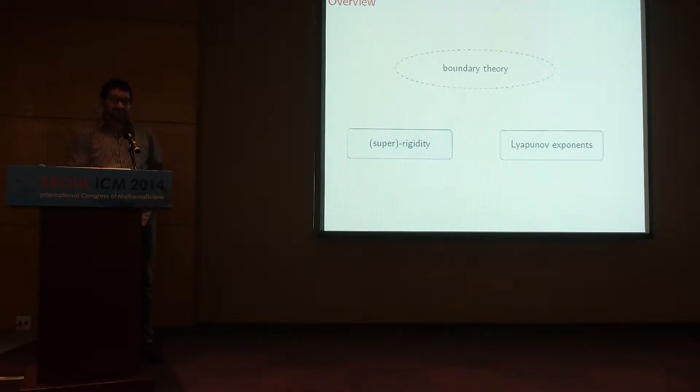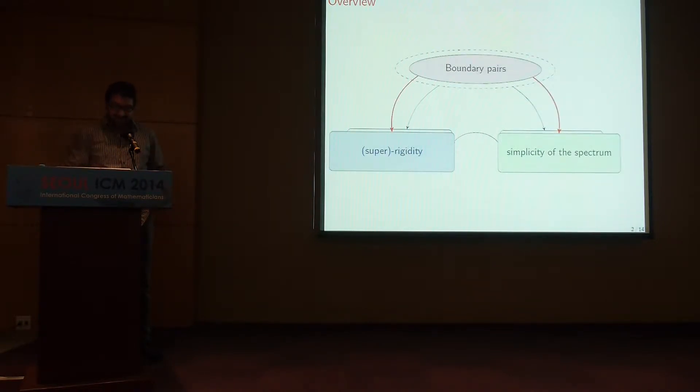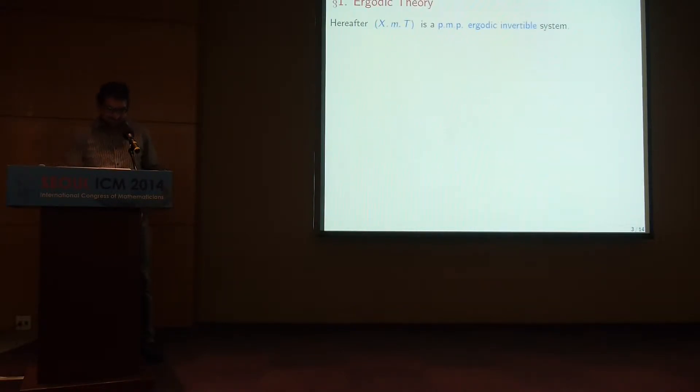In trying to understand superrigidity phenomena with Uri Badr, we were eventually led to some variant on the definition of the boundaries that we found very useful. The three topics are, of course, related and were related before. For example, in his original proof, Margulis used Lyapunov exponents, non-vanishing of Lyapunov exponents for a certain cocycle in the proof of superrigidity theorem. But what I will try to describe, or at least indicate some connections, is some definition of boundaries that helps us to prove some more results and make some others more transparent.